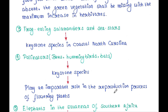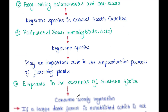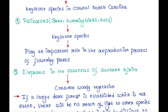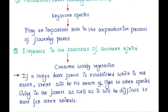Elephants in the savannahs consume woody vegetation. If a large dense forest is established which is not eaten by elephants, there will be no reach of light to other species living in the forest, and it will also be difficult for other animals to move through.